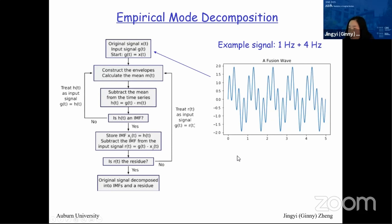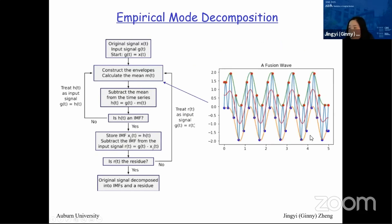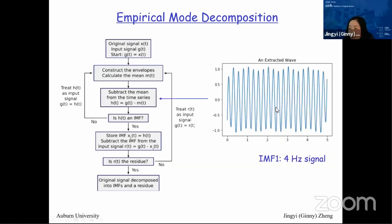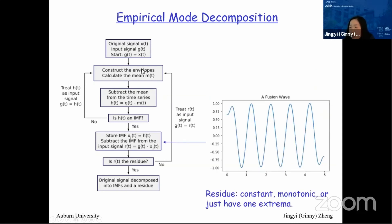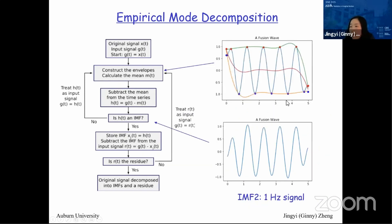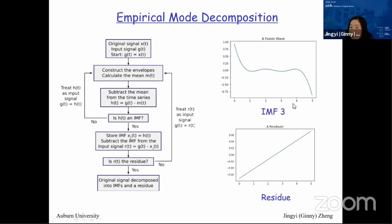The sifting process captures local minima and maxima, lines them up by spline, calculates the mean function, and subtracts it. For example, a simulated signal composed of 1 Hz and 4 Hz components: the sifting process first extracts the 4 Hz signal as IMF1. Taking the residual as input and repeating gives IMF2 (the 1 Hz signal). Boundary effects appear as IMF3. Putting all IMFs and residuals together reconstructs the raw signal. For raw EEG signals, we show the first five IMFs — the remaining IMFs contain signals below 0.5 Hz which are not of interest.